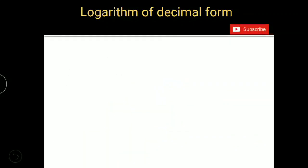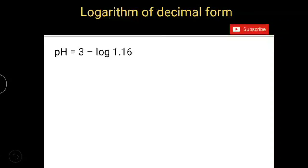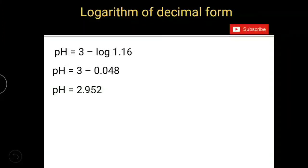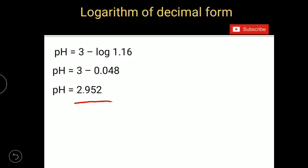If you substitute that value here, pH equals 3 minus log 1.16, then you will get 3 minus 0.048. And pH will be equal to 2.952. Suppose if we use logarithm tables to solve this question, then we will get 2.935.